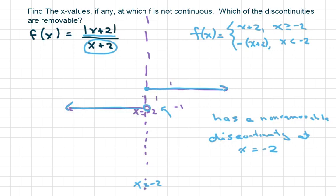However, the limit does not exist because the limit from the right side, limit as x approaches negative 2 from the right, does not equal the limit as x approaches negative 2 from the left of f of x.